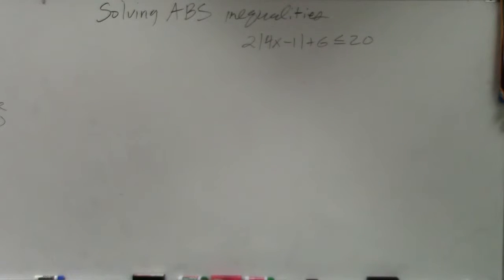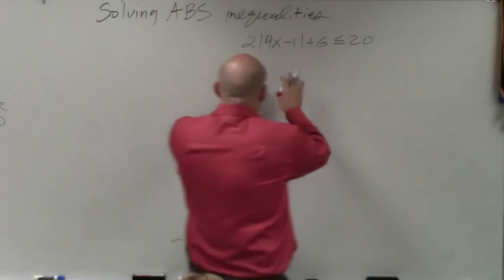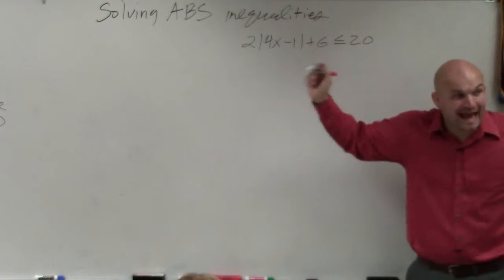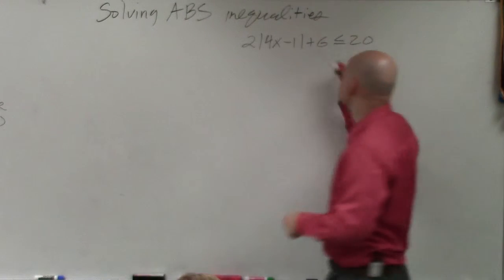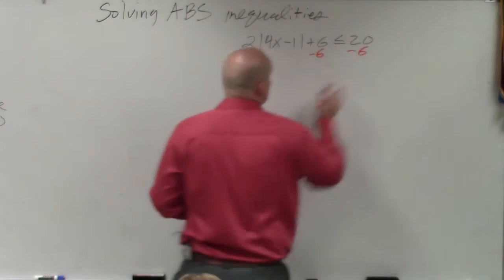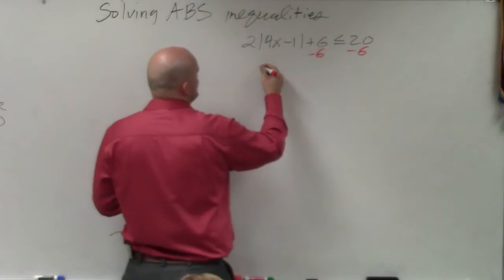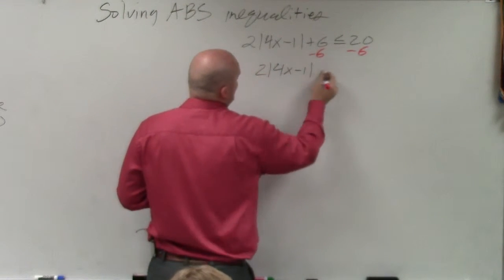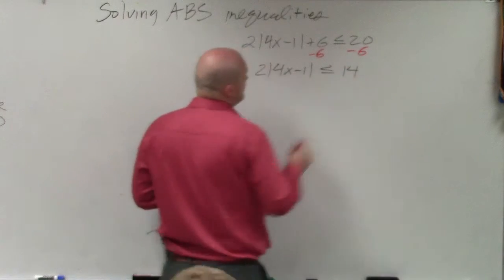The absolute value. So now you guys can see this absolute value is being multiplied by 2, and it's being added by 6. So first thing we always undo is addition and subtraction. So we subtract the 6 on both sides. So I have 2 times absolute value of 4x minus 1 is less than or equal to 14.